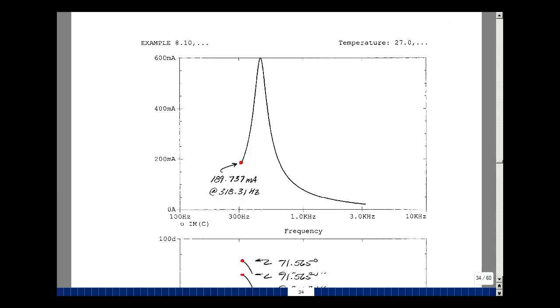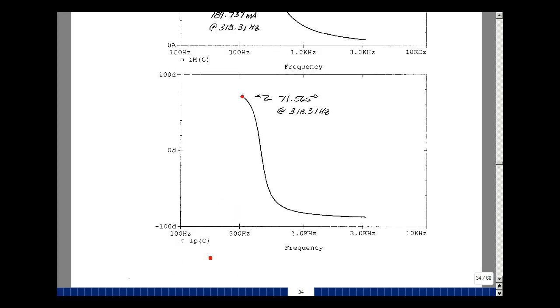Phase angle, I p of C was 71.565, and we calculated exactly 71.565.